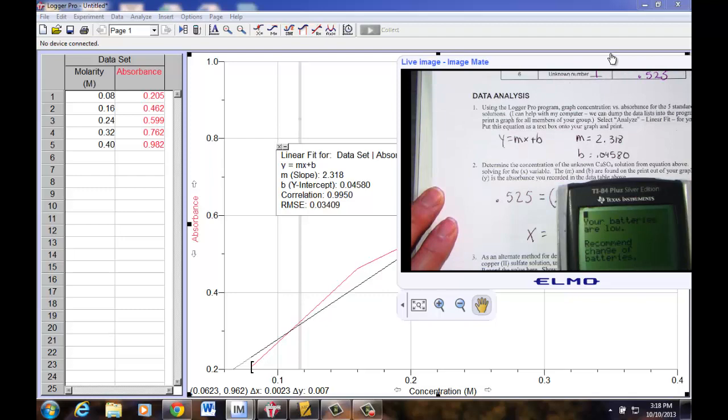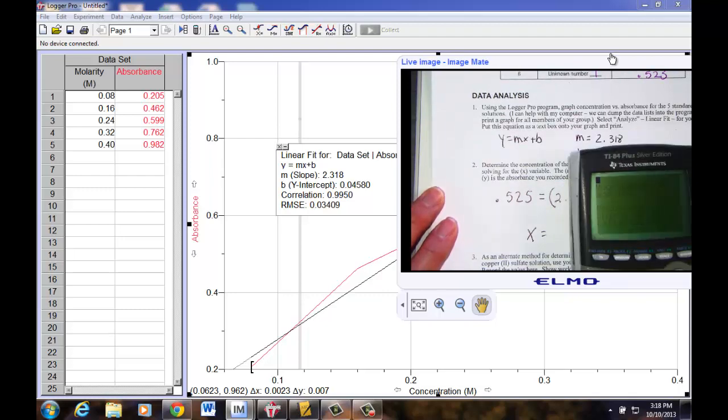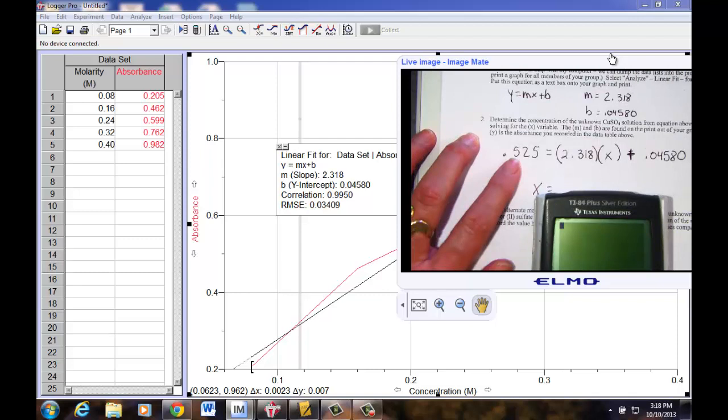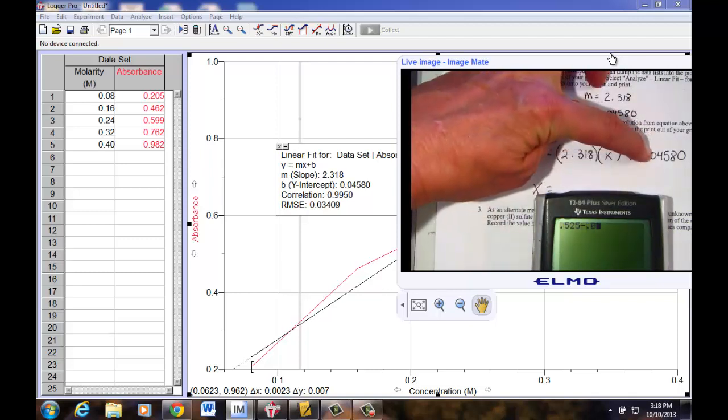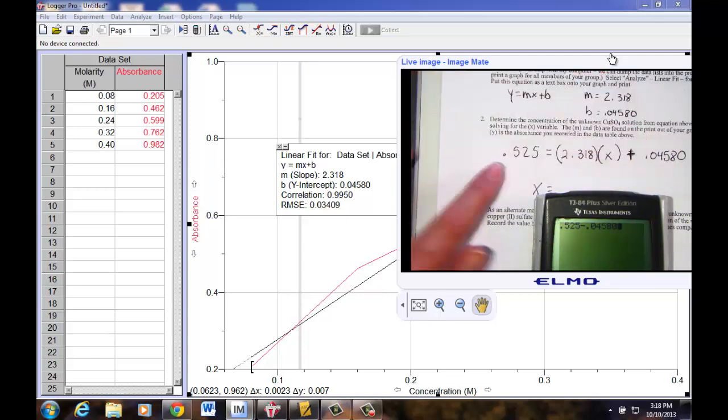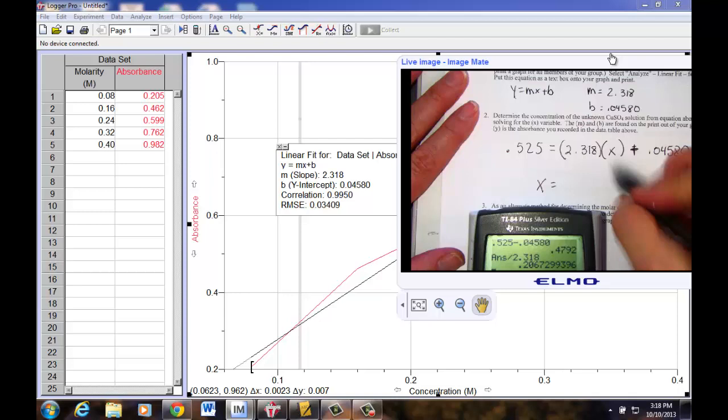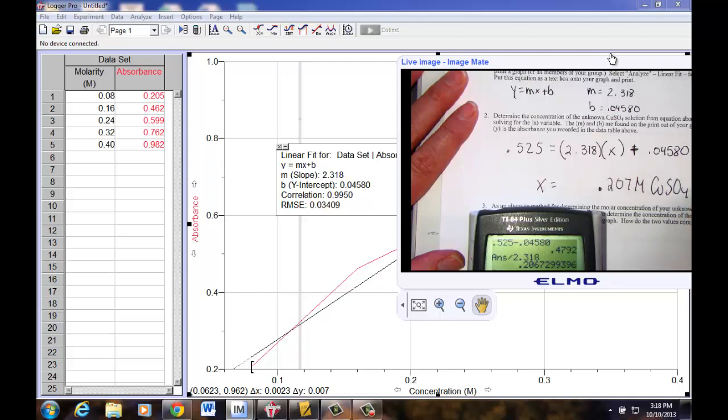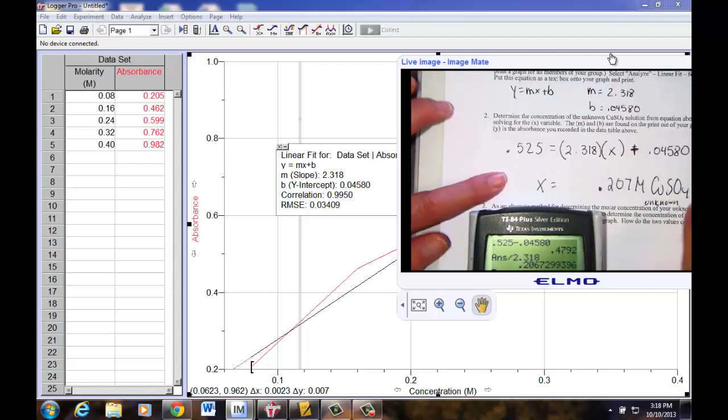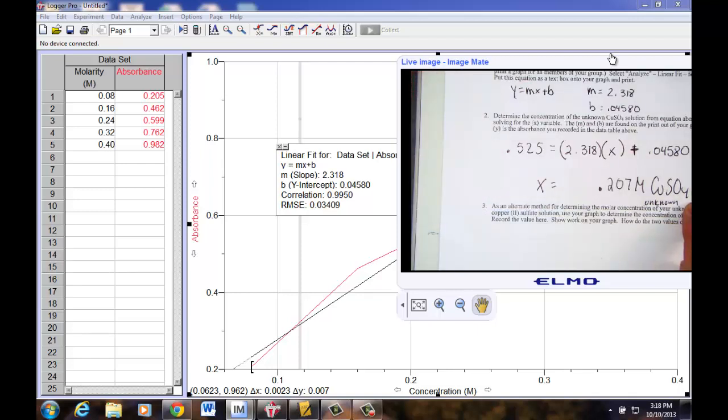So with our calculator, we are going to simply solve this algebra. So 0.525 minus 0.04580 equals divide out to 0.318 and we get an answer. And that answer represents the concentration of our unknown solution, copper 2 sulfate pentahydrate, the unknown value. And this right here is the heart of your grade, making sure that you end up with a correct answer.